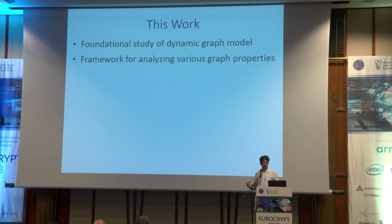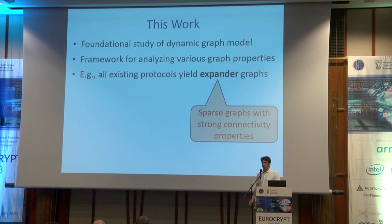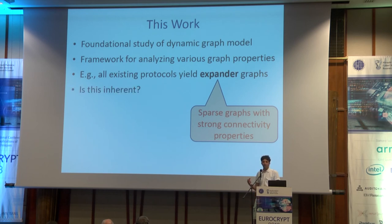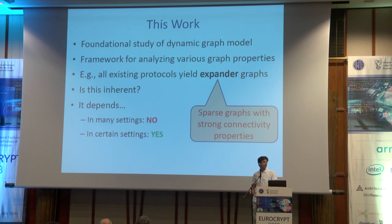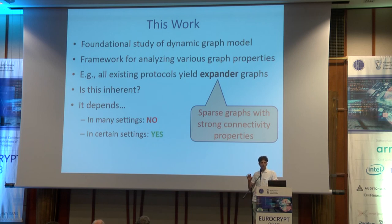We have a framework to analyze the various graph properties that come from these protocols. As an example, we look at the property of expansion. All of the protocols we know, both in secure computation and distributed computing, have an underlying communication graph that is an expander. We want to see whether this is really inherent. Like everything in life, the answer is: it depends. We show that in many settings, we can have protocols that are secure but in a very strong sense not expanding. But for some functionalities in some settings, any secure protocol must use an expander.